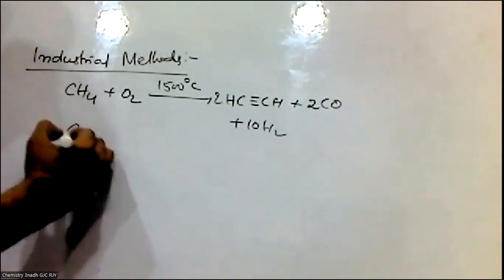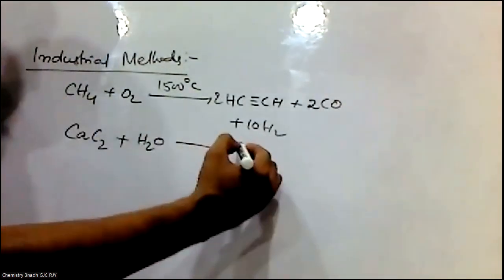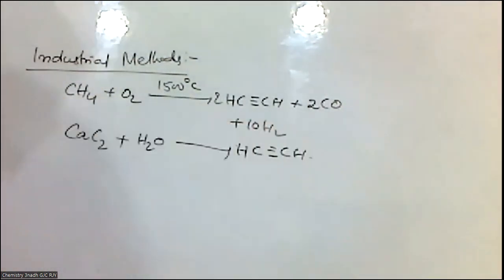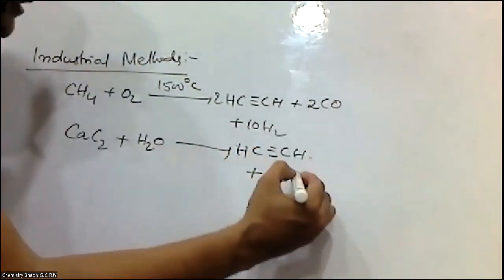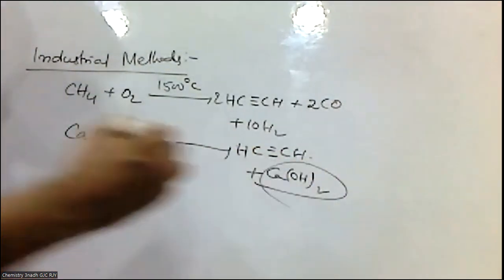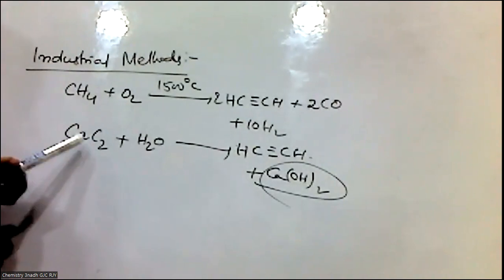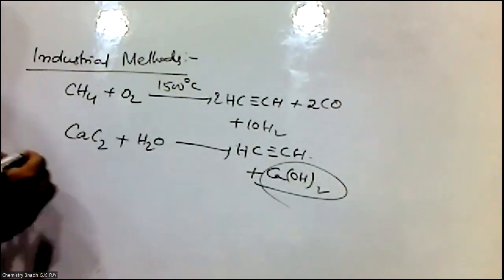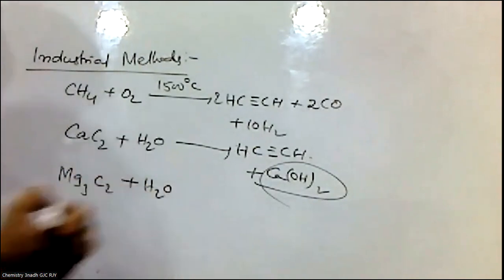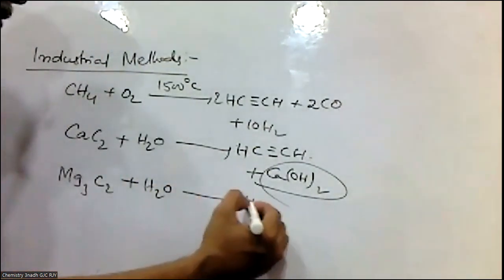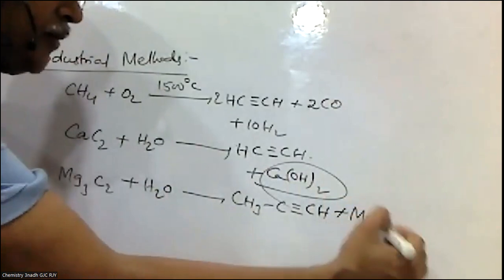Acetylene can also be prepared by the hydrolysis of calcium carbide. Calcium carbide on hydrolysis produces acetylene — Ca(OH)₂ (slaked lime) is also formed. Similarly, magnesium carbide on hydrolysis gives propyne.